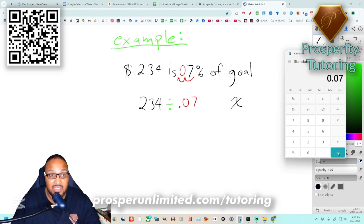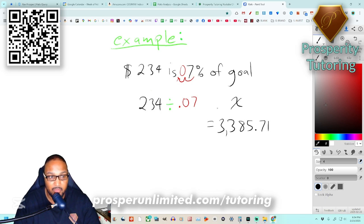It tells us our goal was three thousand three hundred and eighty-five dollars and rounded up to seventy-one cents.